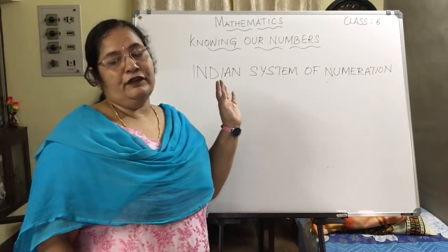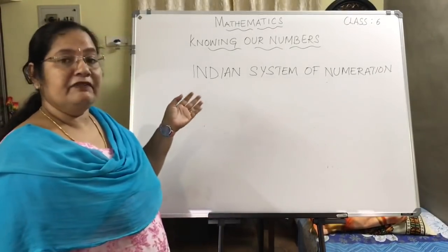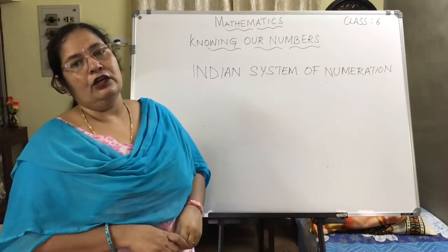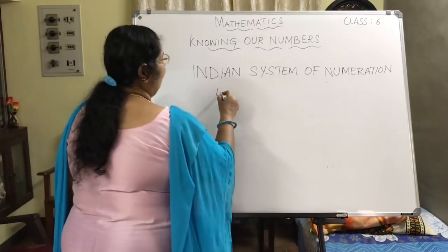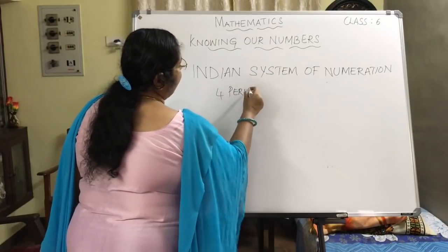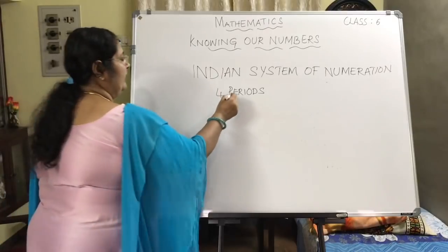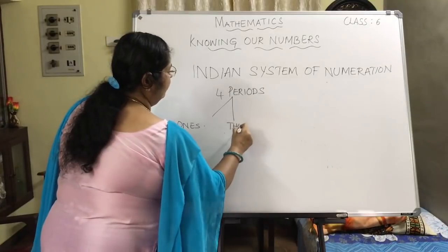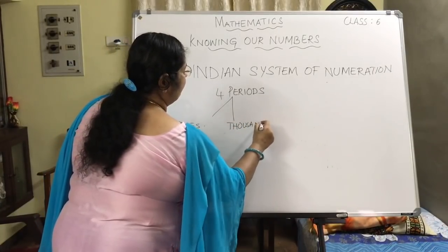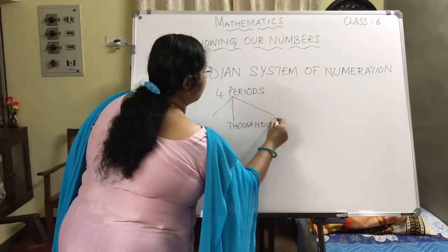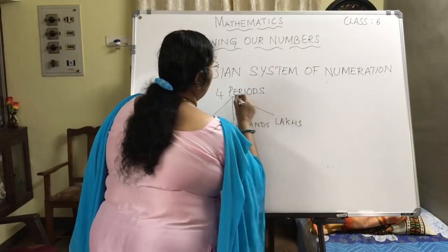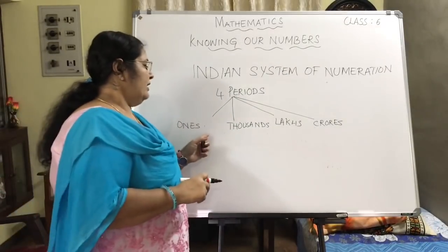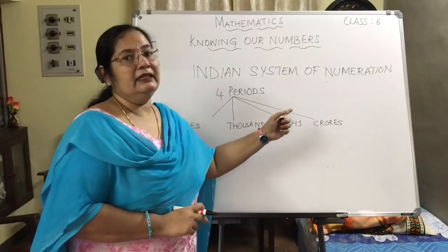In the Indian system of numeration we have got four periods. Which are the four periods? The ones period, the thousands period, the lakhs period, and the crores period.